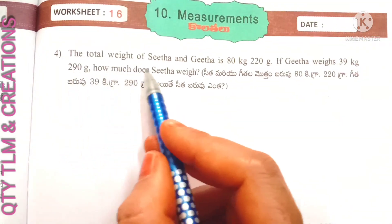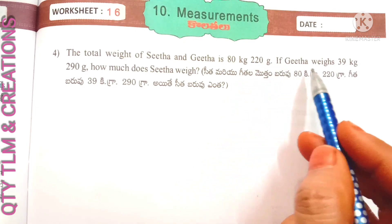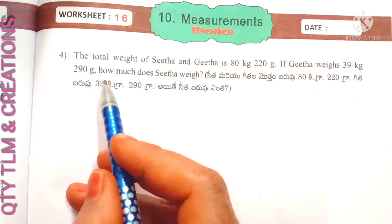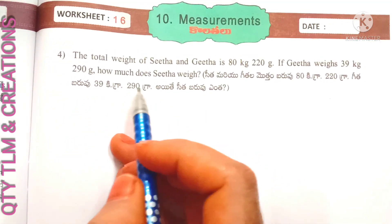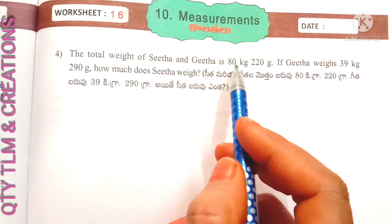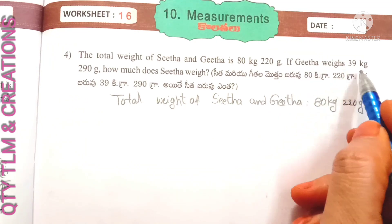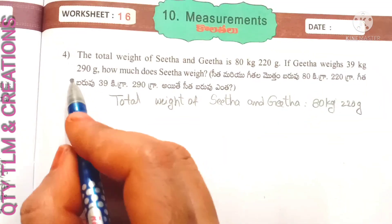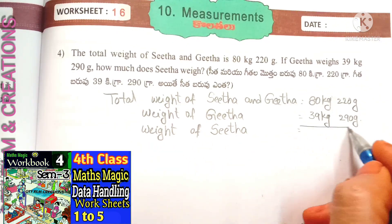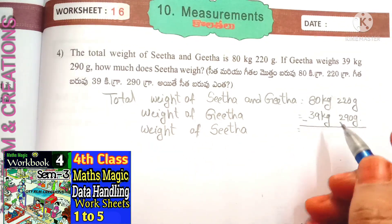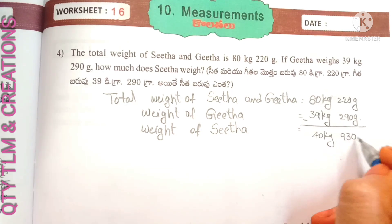Next question: the total weight of Sita and Gita is 80 kilograms 220 grams. If Gita weighs 39 kilograms 290 grams, how much does Sita weigh? Total weight of Sita and Gita equals 80 kilograms 220 grams. Weight of Gita equals 39 kilograms 290 grams. Weight of Sita equals 40 kilograms 930 grams.